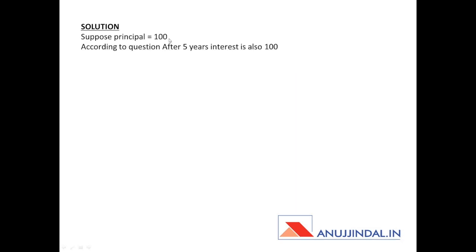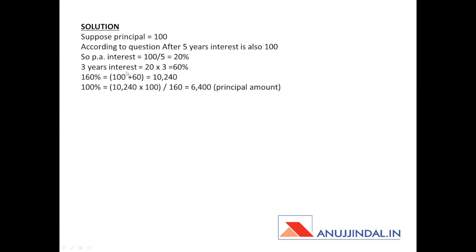Suppose the principal is 100 rupees. After five years, the interest is also 100 rupees, so the per annum interest rate is 20 percent (100 percent ÷ 5 years). In three years, the interest will be 60 percent. So the amount at three years equals 100 percent principal plus 60 percent interest = 160 percent, which equals 10,240 rupees. Using the unitary method, 100 percent equals 10,240 × 100 ÷ 160.